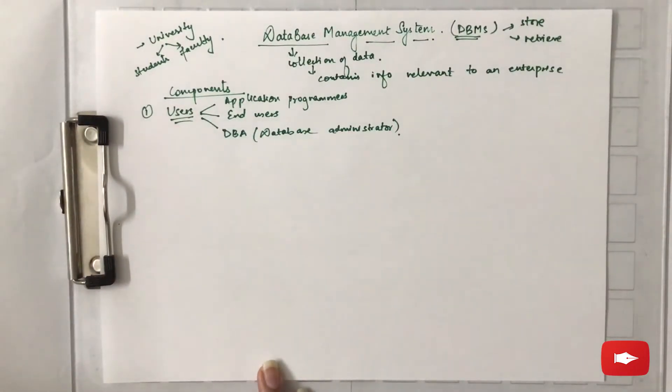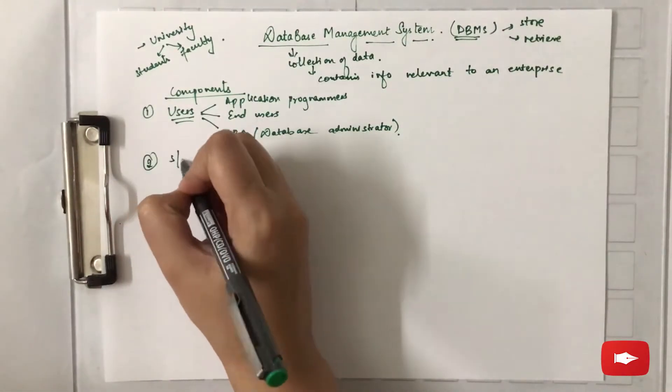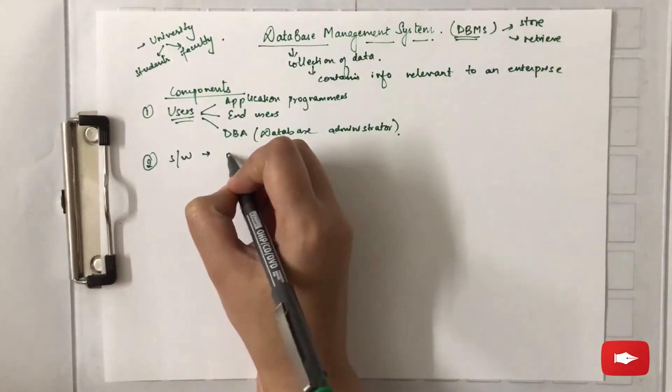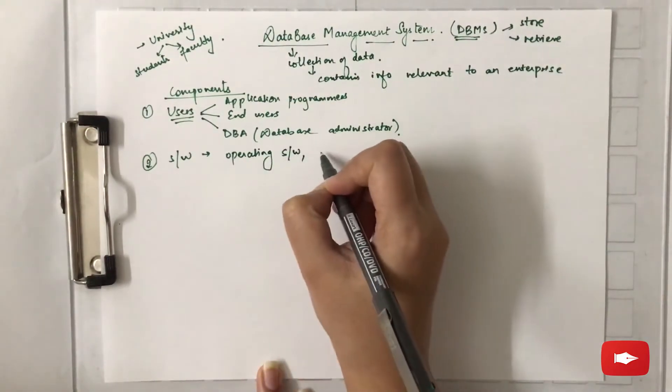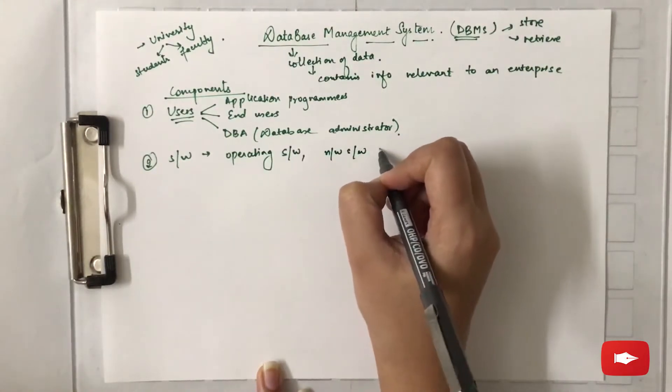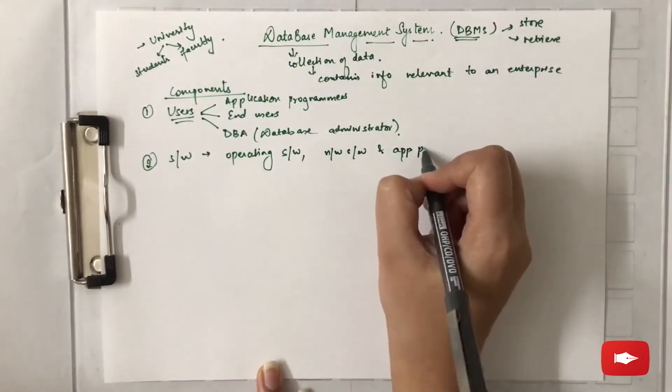The next component is the software, which involves the operating system, network software, and application programs.